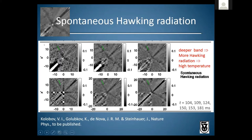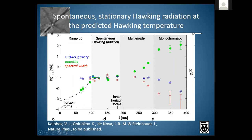The correlation function is in position space, so to get a temperature we take the Fourier transform to go to k-space. Qualitatively: the deeper the band is, the more Hawking radiation there is, and more Hawking radiation corresponds to higher temperature. By computing the depth of the correlation band we get the green points — a measure of the quantity of Hawking radiation. During the spontaneous period, the green circles agree with the blue circles, implying that the quantity of Hawking radiation is as expected for spontaneous Hawking radiation.